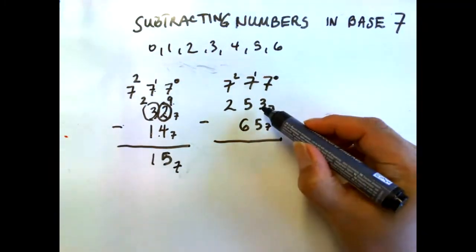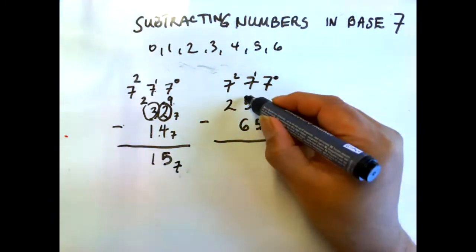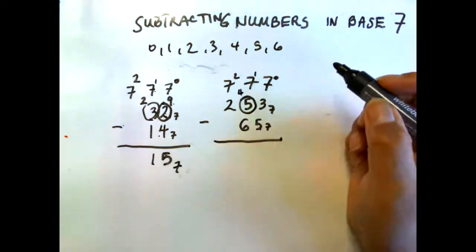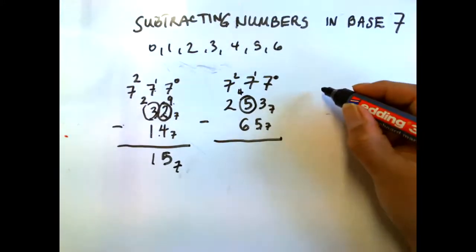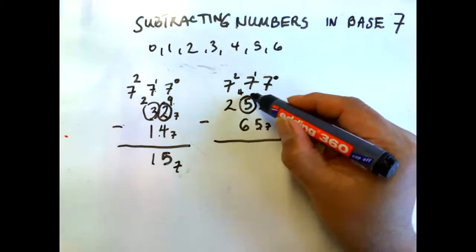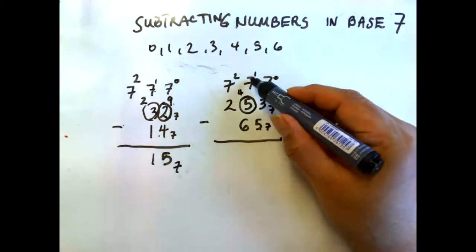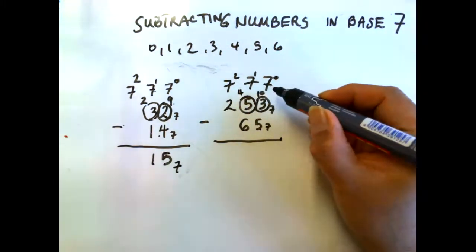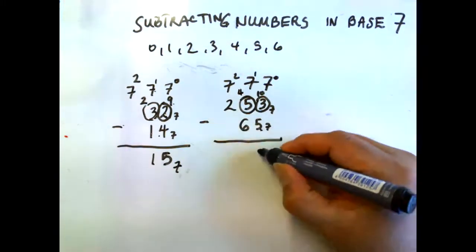So three less five — we cannot do it, so we have to borrow one from the next digit. That digit becomes four. The one we borrowed is worth seven, so seven plus three gives us a new value of ten. Ten less five is five.